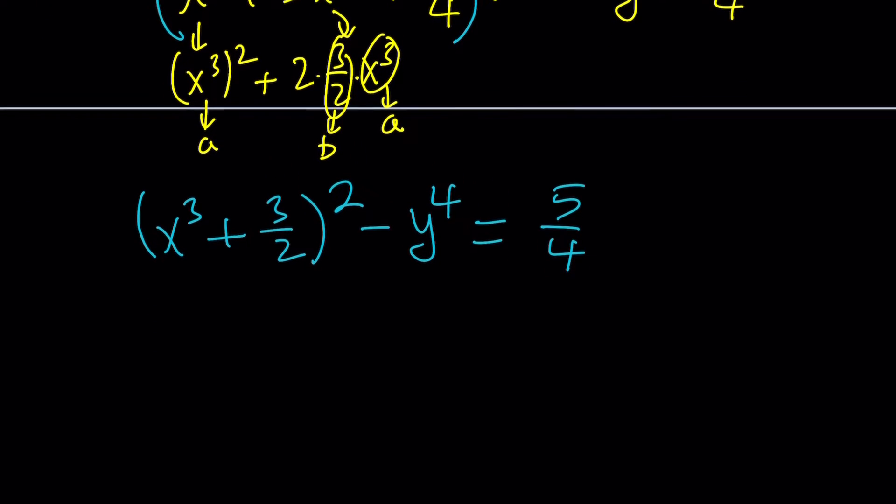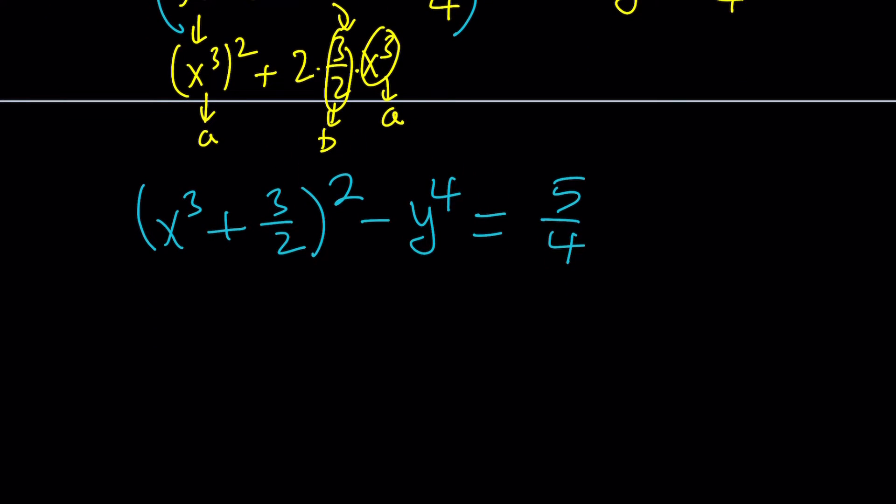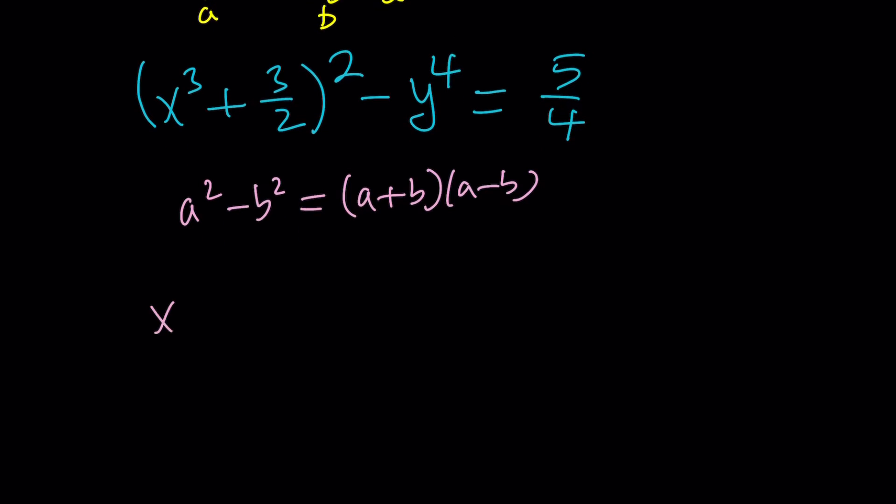Awesome. So we got our difference of two squares on the left, which is awesome. And now we're going to factor this. How do you factor it? Well, easy. If you have a squared minus b squared, that can always be written as a plus b times a minus b. So let's go ahead and use that rule. x squared plus 3 halves minus y squared and x squared plus 3 halves plus y squared. And that is equal to 5 fourths.